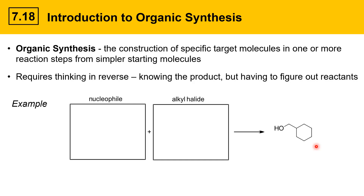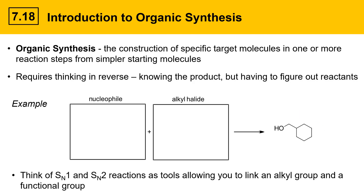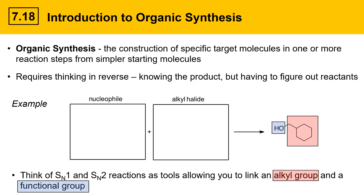Here's an example. The product molecule is an alcohol — it has a hydroxy functional group and then it has an R group. Think of the SN1 and SN2 reactions as tools that allow you to make a molecule where you link an alkyl group and a functional group. We just need to figure out what nucleophile and what alkyl halide to put together to make this species. Think of the functional group as the nucleophile part and the R group as the alkyl halide part. The nucleophile would attack the carbon of the alkyl halide, the leaving group would leave, and that gives us the bond linking the nucleophile and the alkyl group.